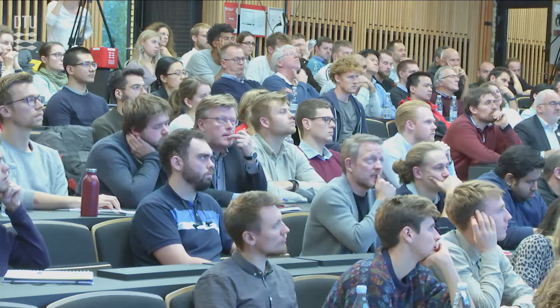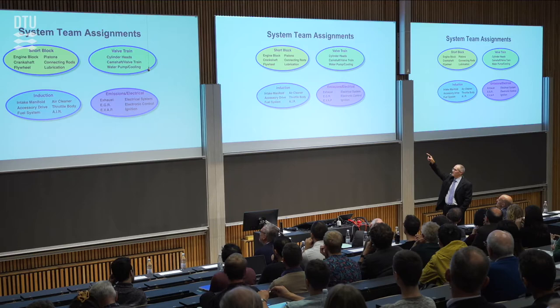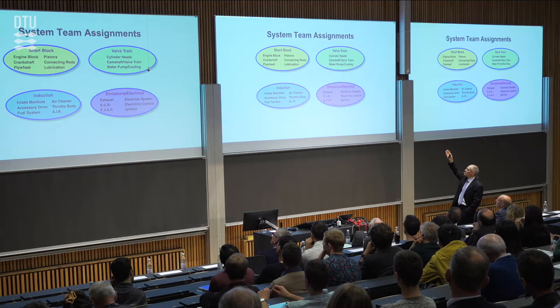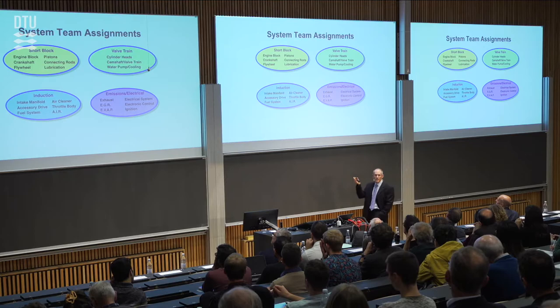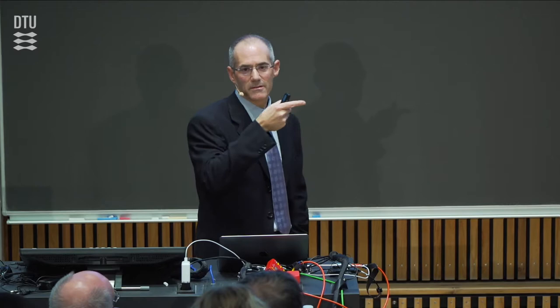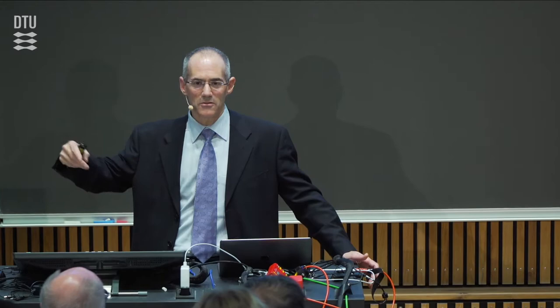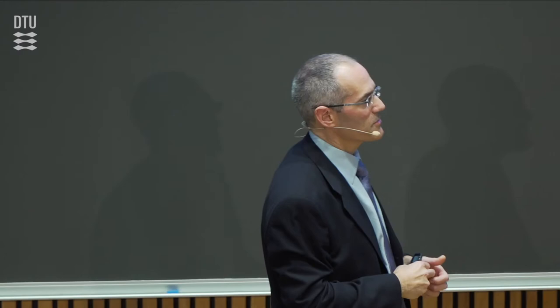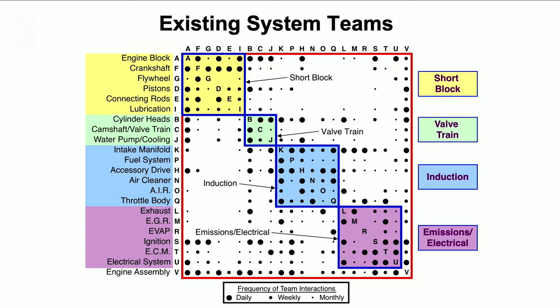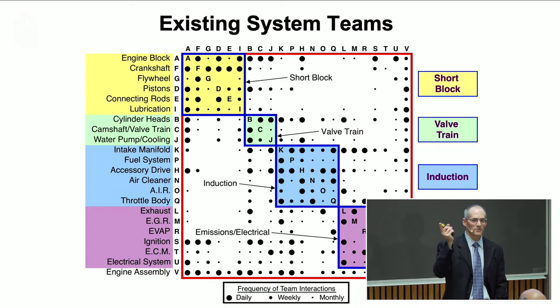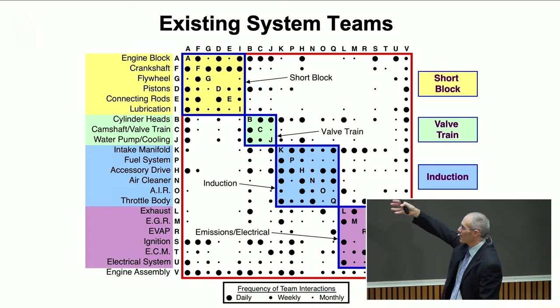Here's the layout of the subsystems: the short block — think of it as the bottom of the engine — is comprised of six PDTs; induction — where air and fuel mix — is another six PDTs; valve train is the top of the engine; and emissions and electrical. Each PDT is on one of these subsystem teams, and they meet every other Thursday afternoon. All the system teams meet and talk about how to get their set of components to work together. In the matrix, I've clustered component teams according to their assigned subsystem — inside the four colored squares are the system team meetings happening every two weeks on Thursday afternoons.